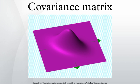Similarly, the inverse covariance matrix provides an inner product which induces the Mahalanobis distance, a measure of the unlikelihood of c.